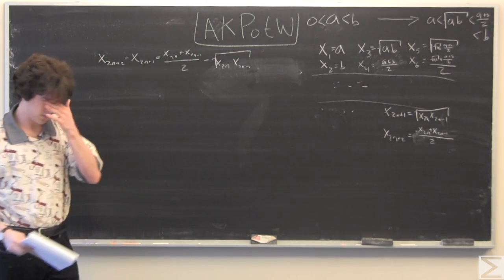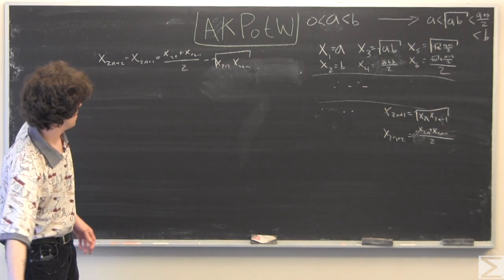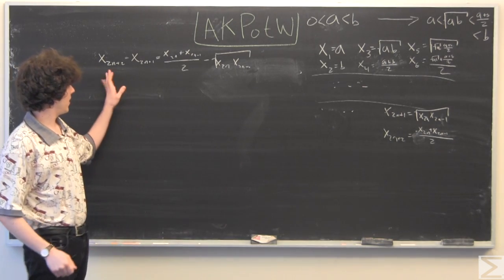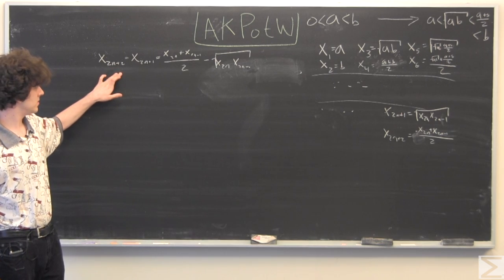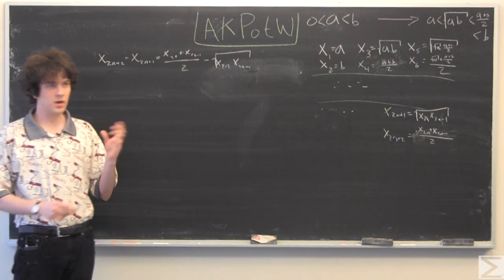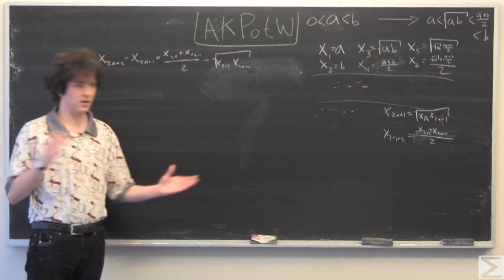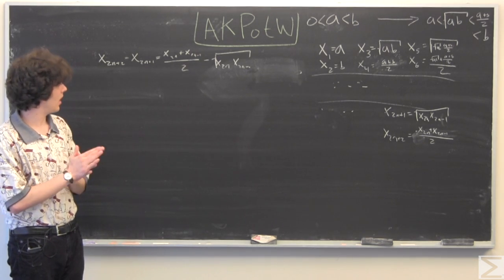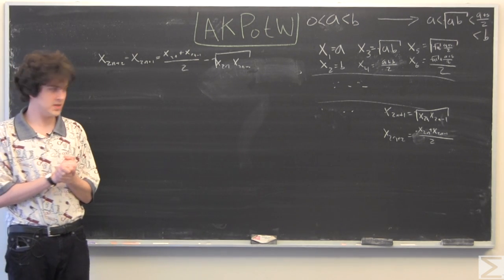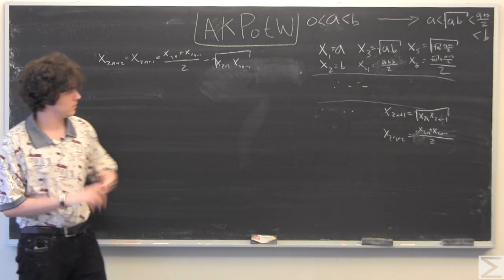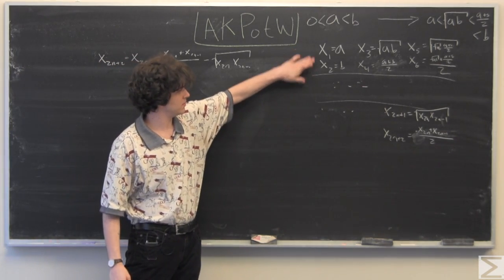So if you recall what x sub 2n plus 2 is, we have a couplet, we have an even and an odd couplet, which you can see here, like between 2 and 1.